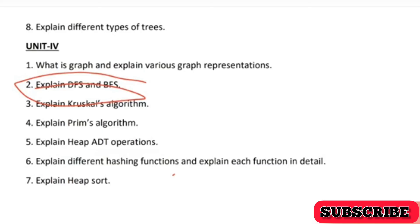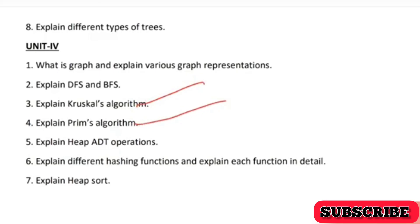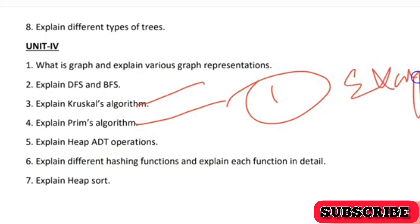The next question in Unit 4 is spanning tree — what is a spanning tree and how to get the minimum spanning tree using Kruskal's and Prim's algorithms. From both techniques, they may ask one. A lot of times they ask you to explain Kruskal's algorithm and Prim's algorithm with an example rather than writing the program, though there is a chance the program may be asked. Go through good examples for constructing spanning trees.